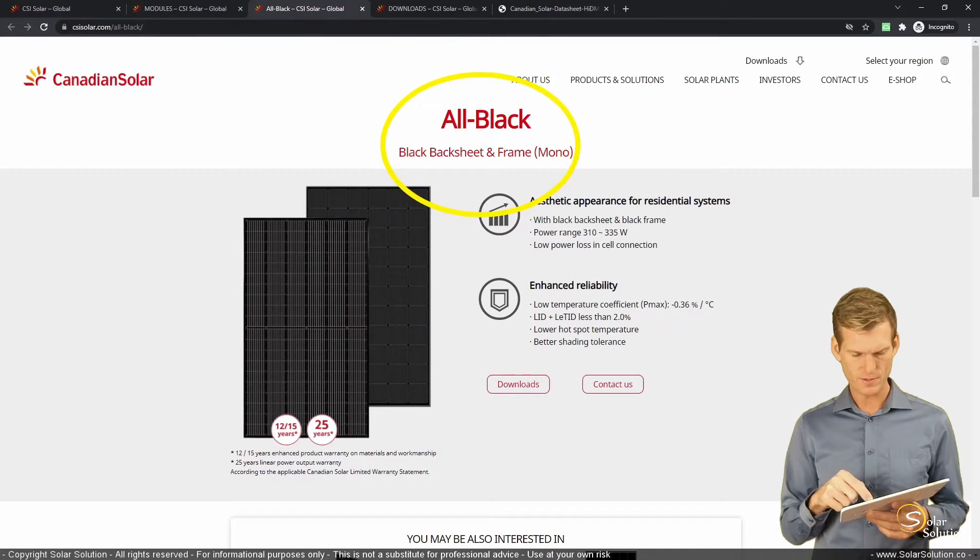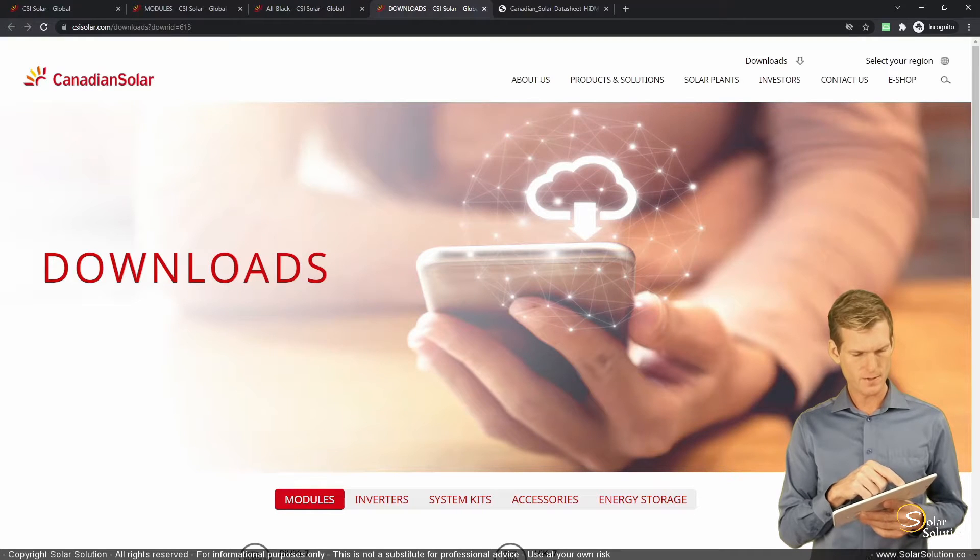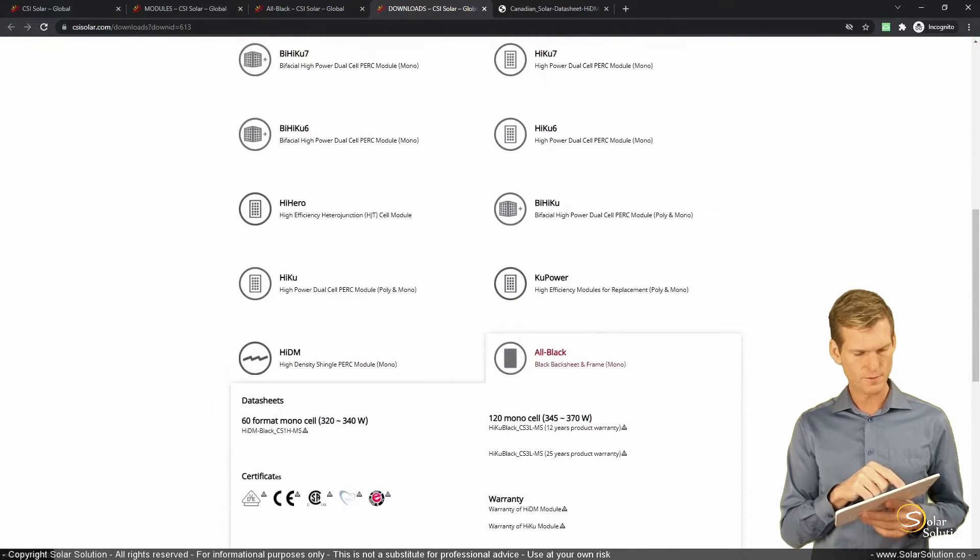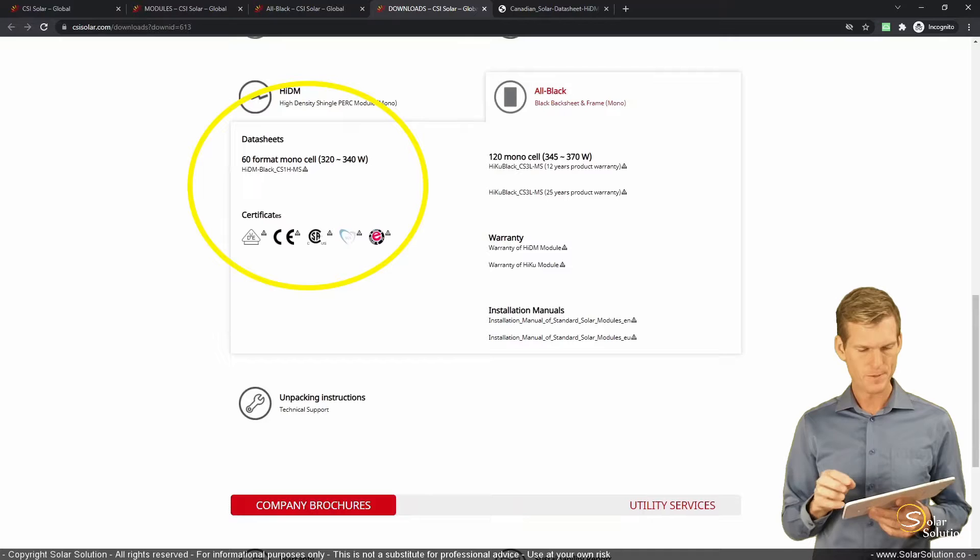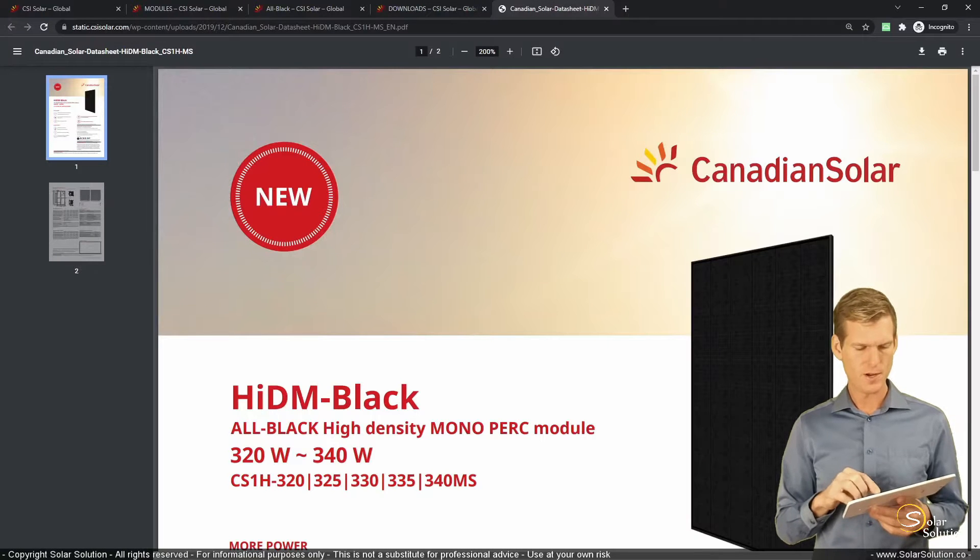All right, and then we want to download, we'll go here, here you go, the 60 cell, mono cell, 320, 340 watts. So let's download the specification sheet, and here we are.